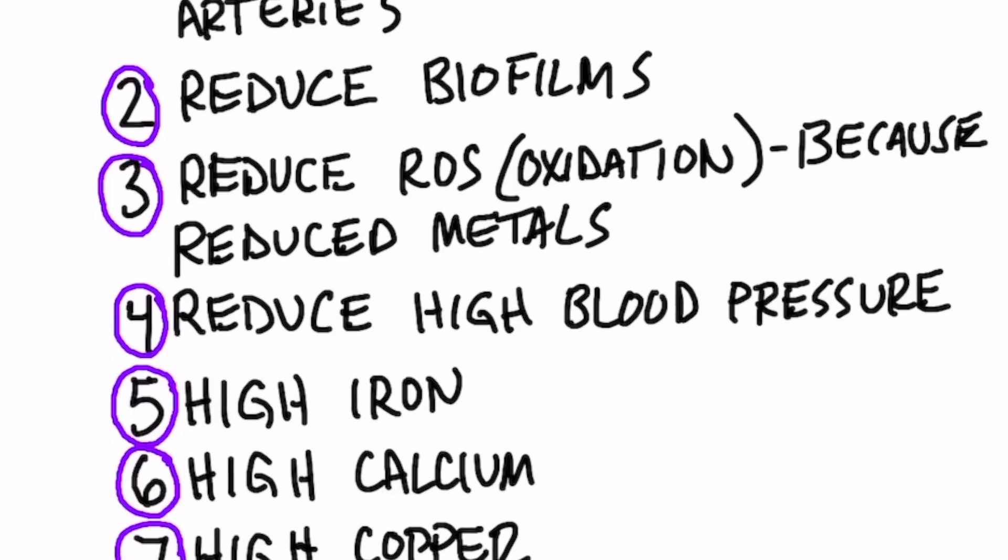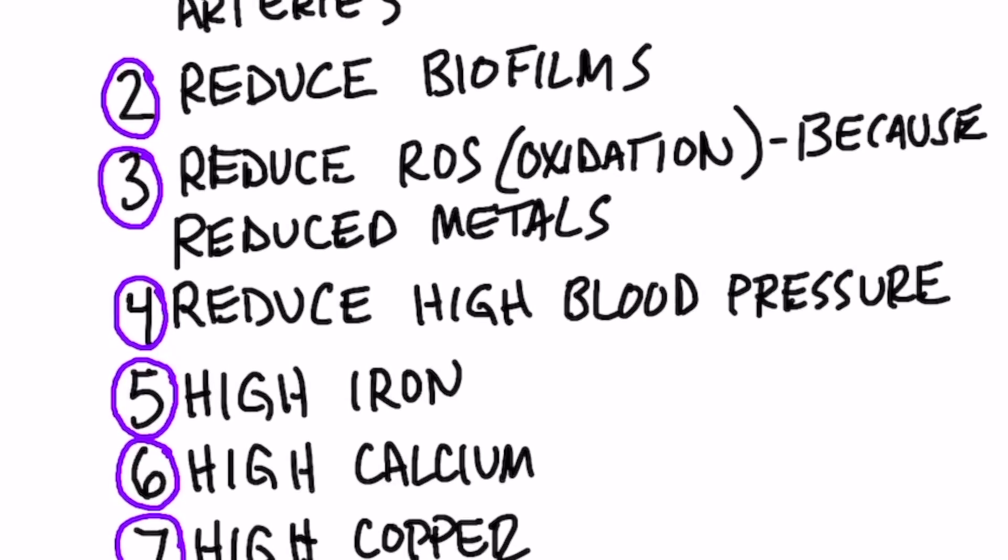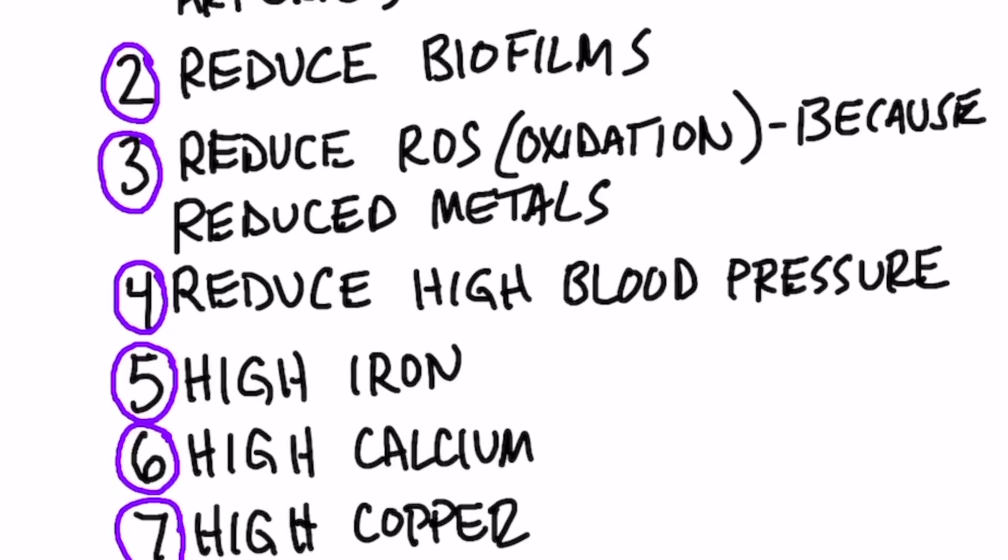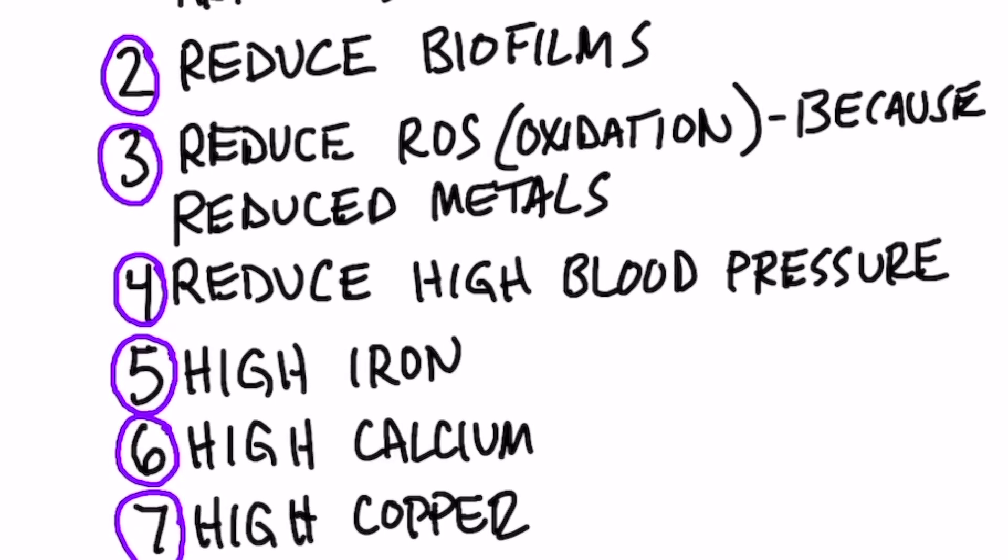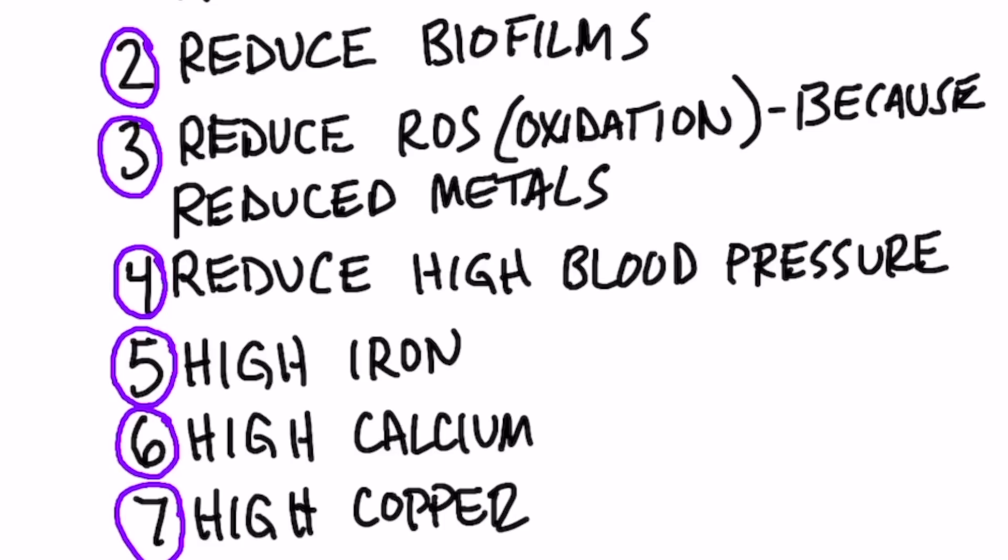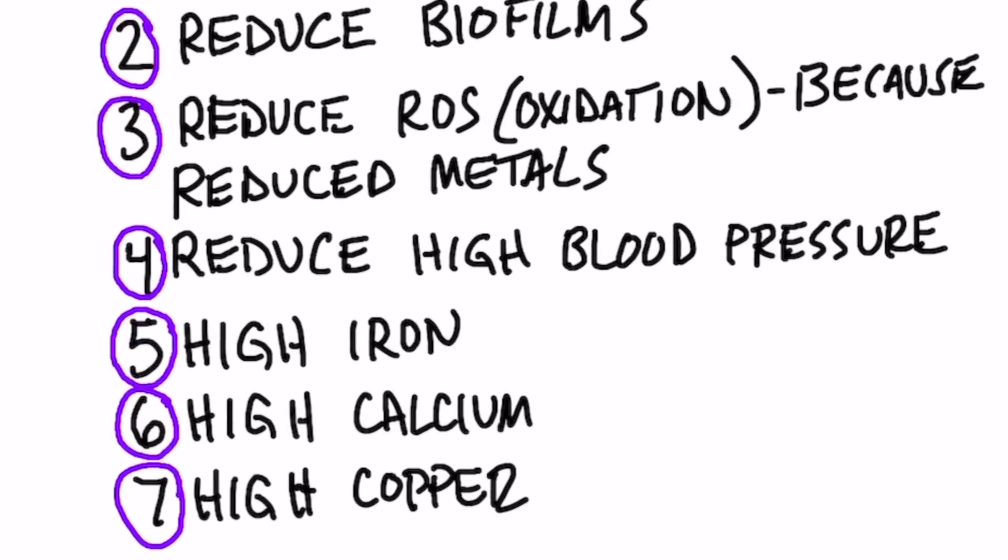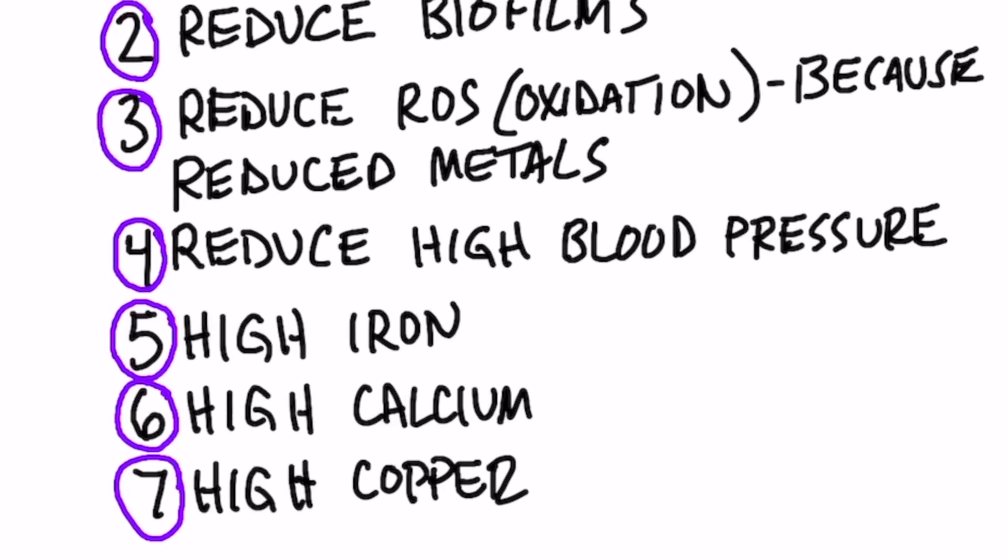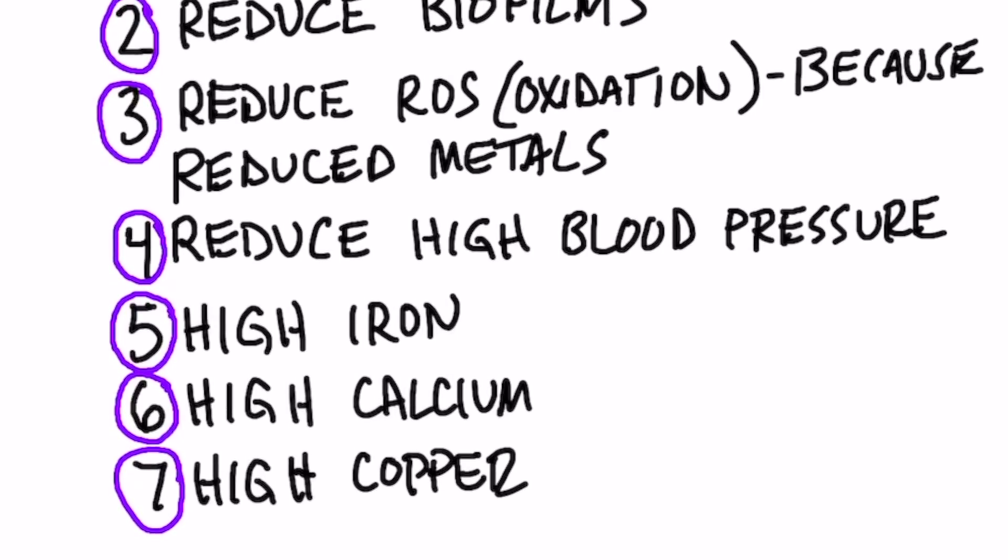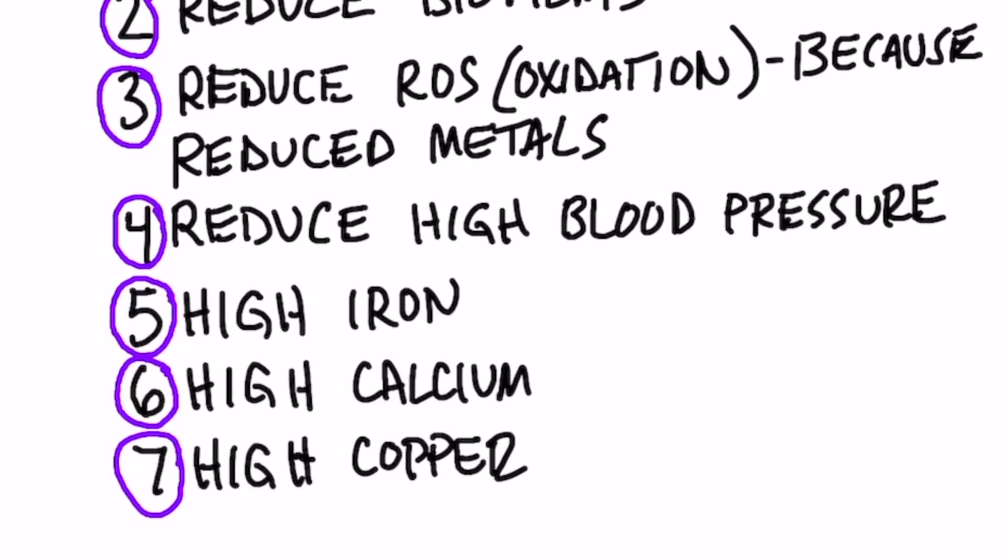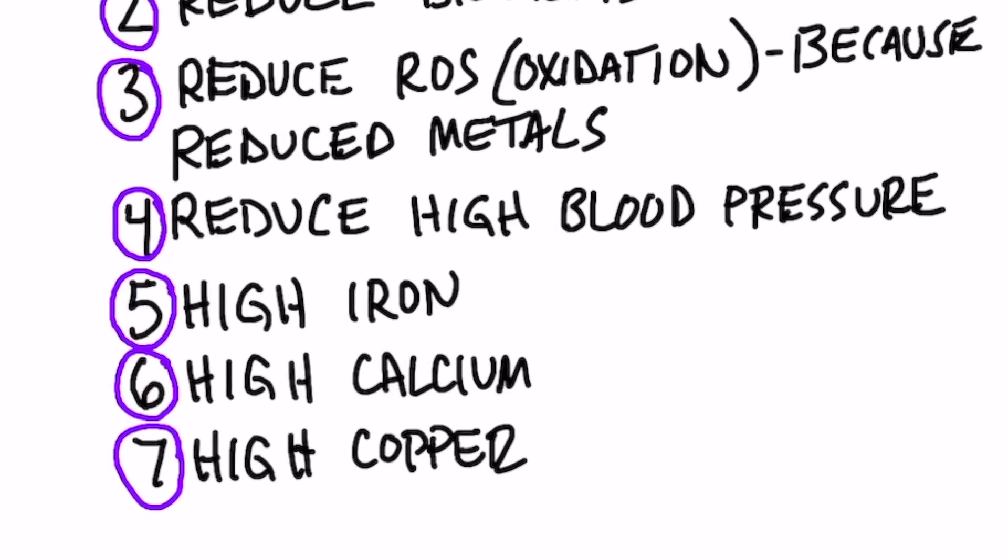Number six, high calcium. If you have too much calcium, I think this would be a good thing to help reduce that amount. Calcium is another mineral that is difficult to remove from the body. So if you're taking a lot of calcium in the diet, you might not be able to get rid of it. Number seven, high copper, as in Wilson's disease, where you can't get rid of excess copper and it's creating a lot of problems. EDTA can help counter excess copper.